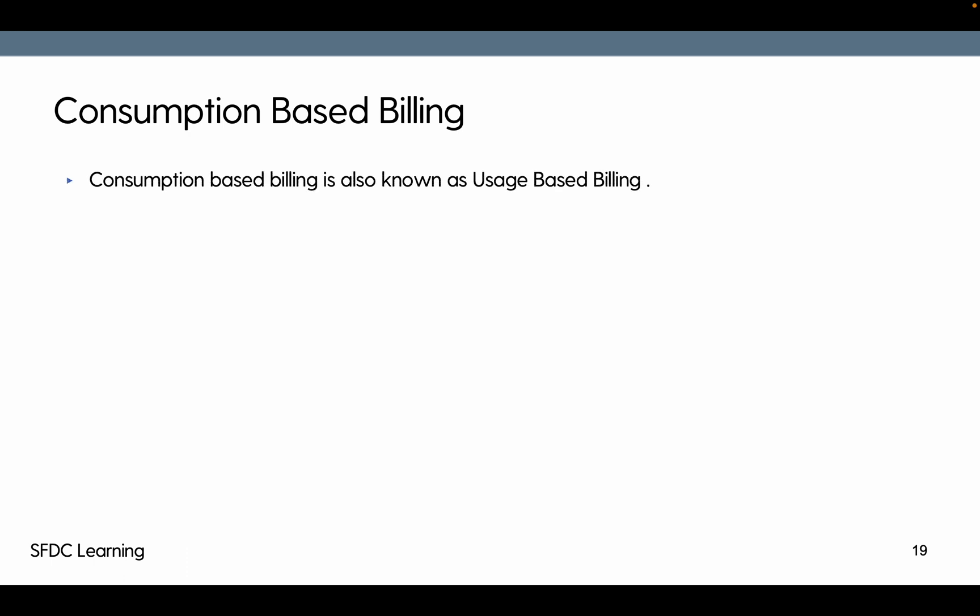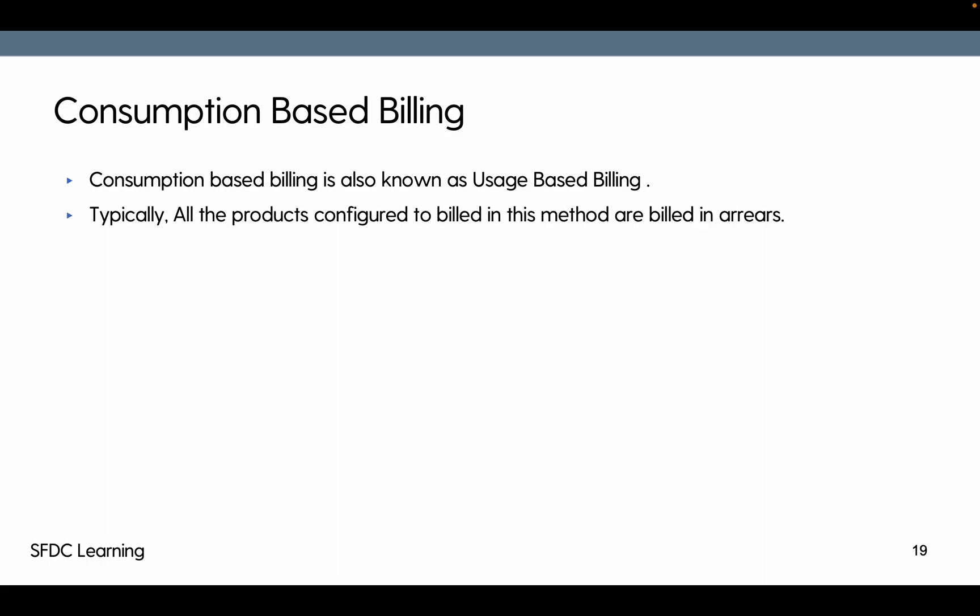So what is consumption-based billing? Consumption-based billing is also known as usage billing — you can also say 'pay as you go.' That means you pay for whatever consumption you have made. Typically, products configured for consumption-based billing are charged in arrears, meaning billing kicks off once you have actually used them. Without usage, you cannot charge, otherwise it would not be consumption-based.